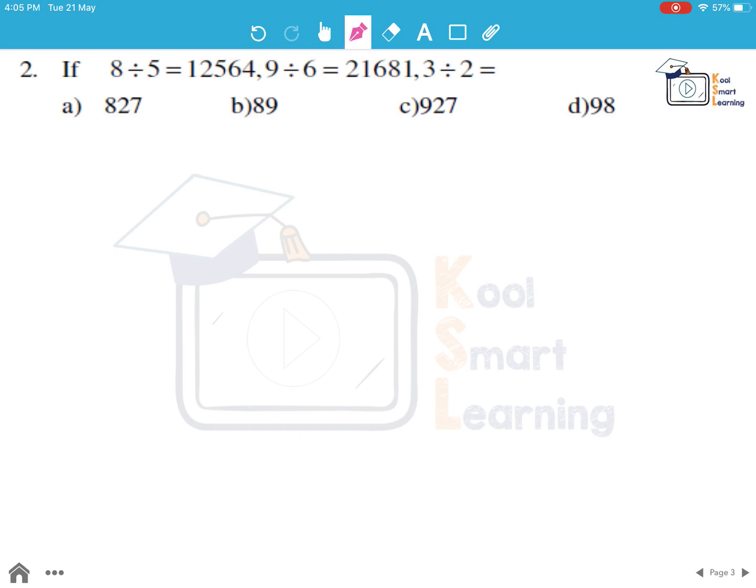Moving to the second question. If 8 divided by 5 is 1, 2, 5, 6, 4 and 9 divided by 6 is 2, 1, 6, 8, 1, then we need to find the value of 3 divided by 2. Now we need to identify the pattern in this. Obviously this is not how mathematically 8 divided by 5 would come out to be or 9 divided by 6 would come out to be. So we need to find out what is the pattern here.